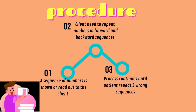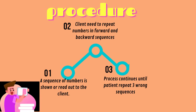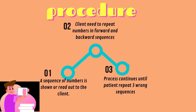The Digit Span test is conducted either verbally or using a computer program. A sequence of numbers is shown or read out to the client, who is then asked to repeat the numbers. This continues until the client can no longer remember the full sequence or correct order. In the reverse trial, numbers are read and the client repeats them in reverse order, continuing until an error is made. Both forward and reverse trials are given twice. However, after three errors in the number sequence, the test ends.